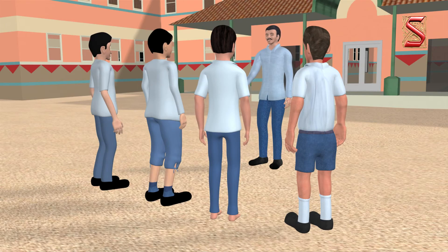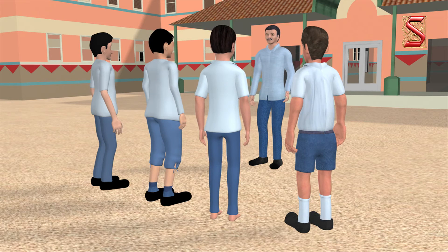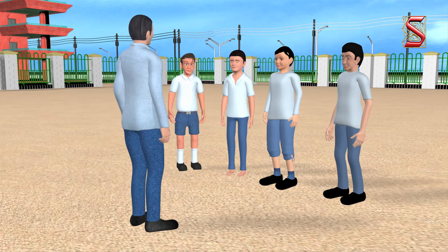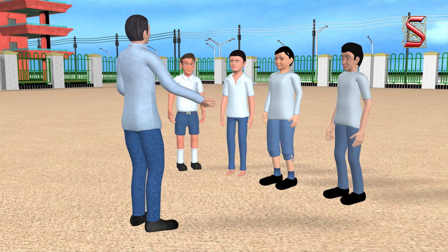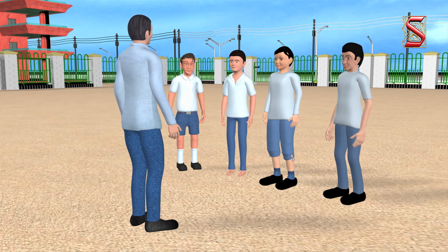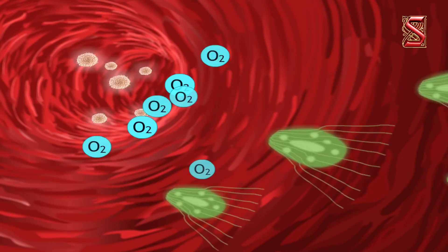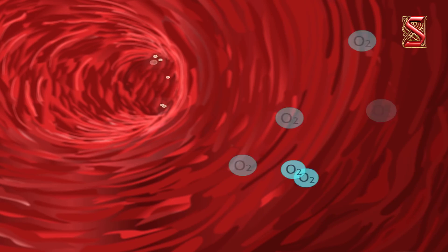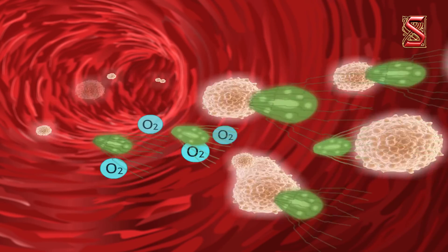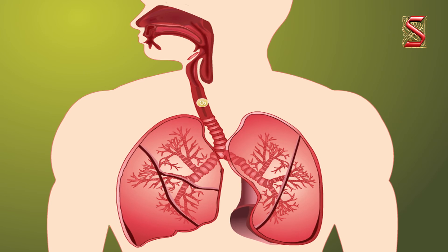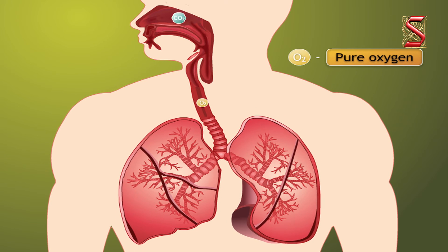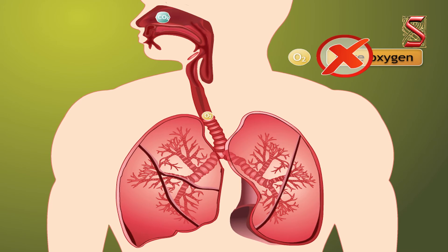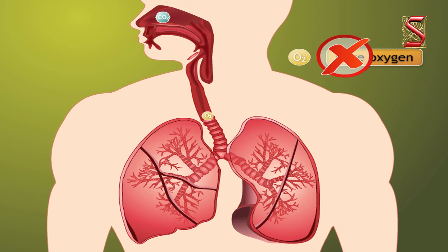Wasn't this session interesting? Before we leave, let me tell you that use of oxygen is essential. However, it is toxic for those organisms that do not use it. For example, our white blood cells use oxygen to kill invading bacteria in our body. Even humans cannot breathe in pure oxygen for long — it is dangerous for human beings to inhale pure oxygen.